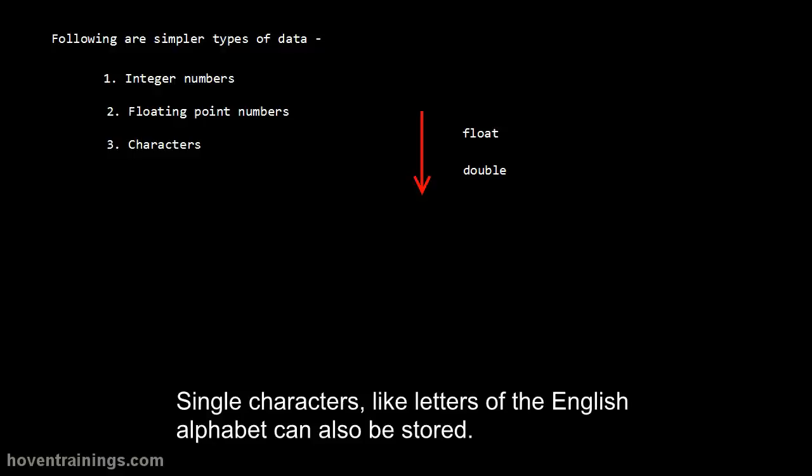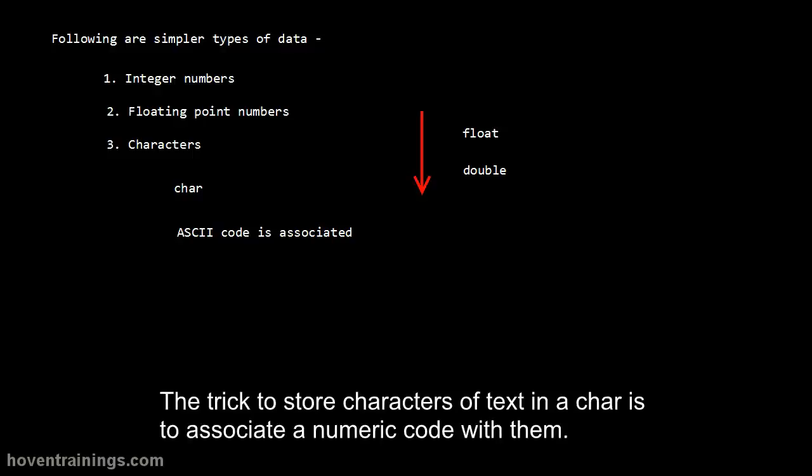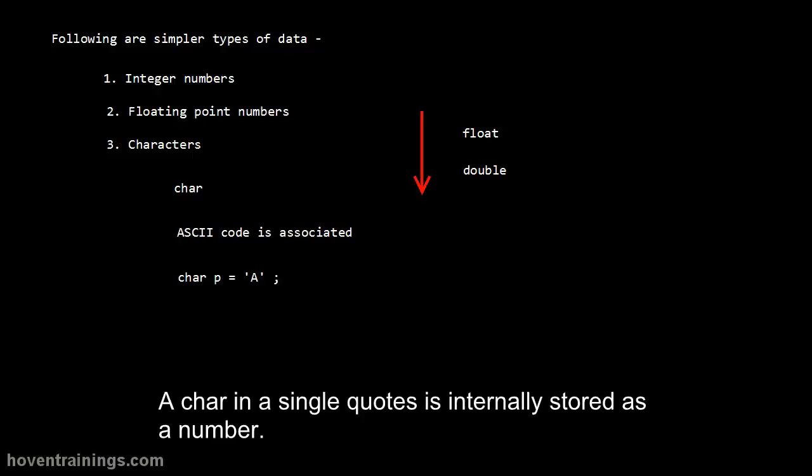Single characters like letters of the English alphabet can also be stored. A char is used to store characters of text. The way to associate a numeric code with them is called ASCII code. This statement stores 'a' in a variable called p. Char in single quotes is internally stored as a number.